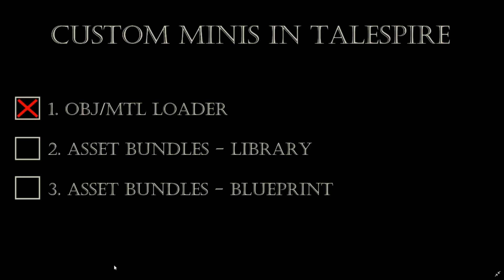With asset bundles there are two ways to bring them onto the board. The first is the Library, supported from the days of the EAR plugin and now again in CALP. You bring out an asset just like any other by opening the library, selecting the minis category, and going through the groups. When assets are downloaded or added, CALP will find them and add them into your library so they appear like any other asset.